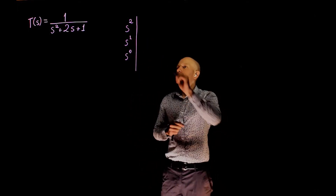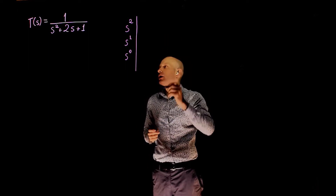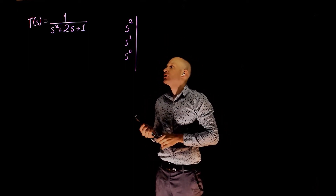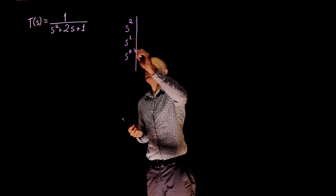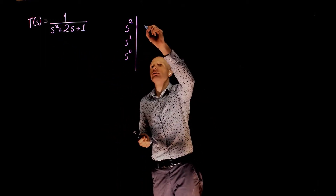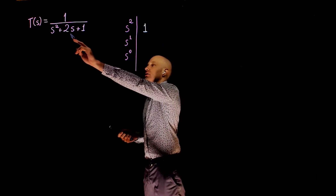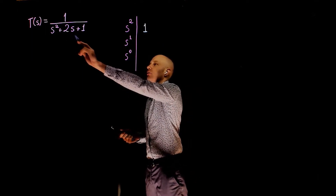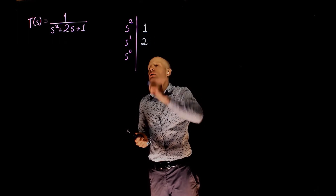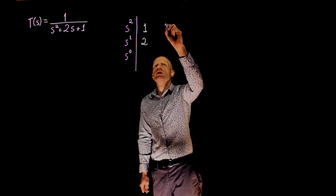Now we can fill in the coefficients of the polynomial in their up-and-down pattern, starting with the highest order, that is 2. The first coefficient, for s to the power of 2, is 1. The coefficient of s to the power of 1 is 2, and the coefficient of s to the power of 0 is 1.